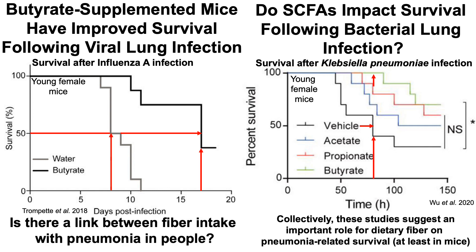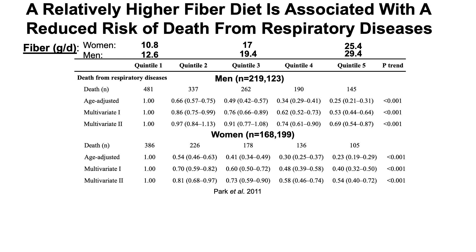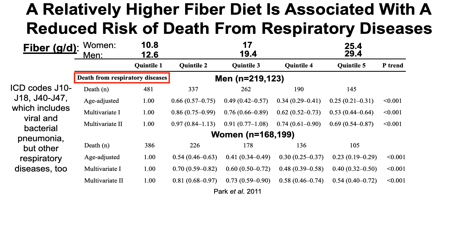But these data are in mice — is there a link between fiber intake and pneumonia in people? A relatively higher fiber diet is associated with a reduced risk of death from respiratory diseases. The ICD codes included J10 through J18, and also J40 to J47, which includes viral and bacterial pneumonia but also other respiratory diseases like COPD. So this isn't specific to pneumonia, but covers all respiratory-related deaths.